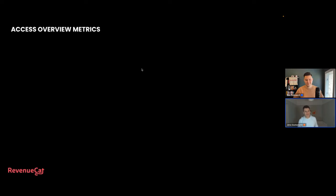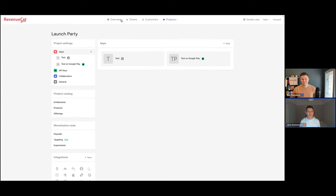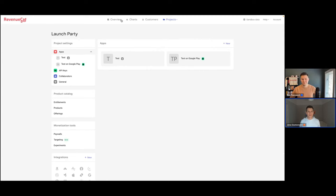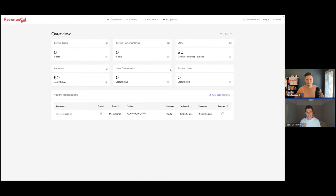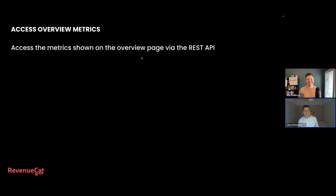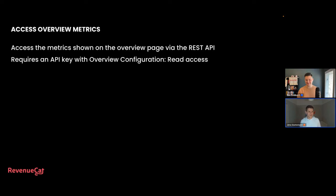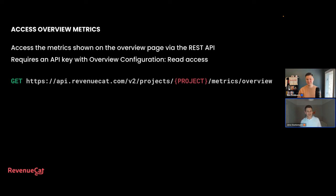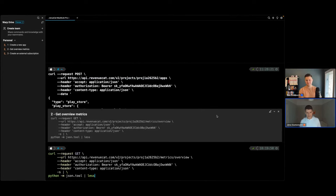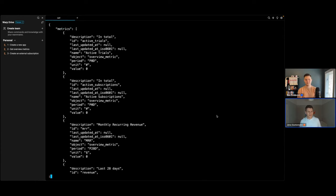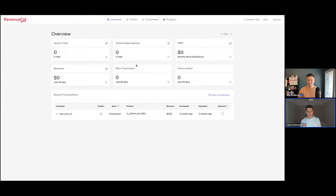The second one is accessing overview metrics. You can now access the metrics shown on the overview page via the REST API. The overview page is this page here — these metrics. Obviously in this case it's a little boring because it has zero dollars in revenue, but the REST API calls work the same. This requires the v2 REST API key with overview configuration read access, and then you call the endpoint projects slash {project_id} slash metrics slash overview. You get back a JSON object with all of the metrics, including some metadata about when it was last updated. So if you want to build your own dashboard, you can now pull this information directly from our APIs.